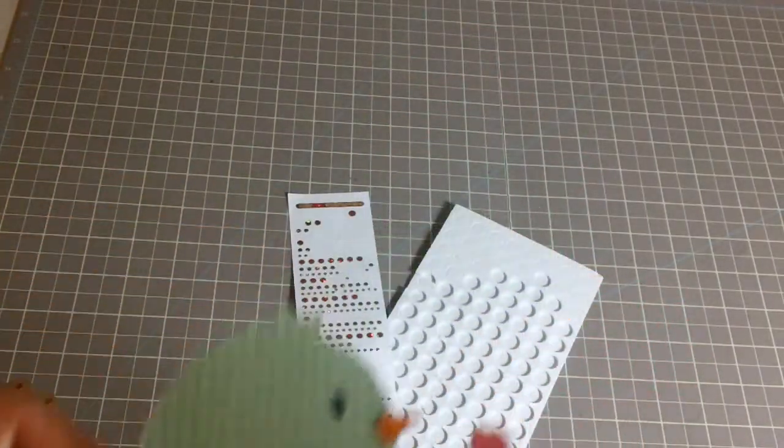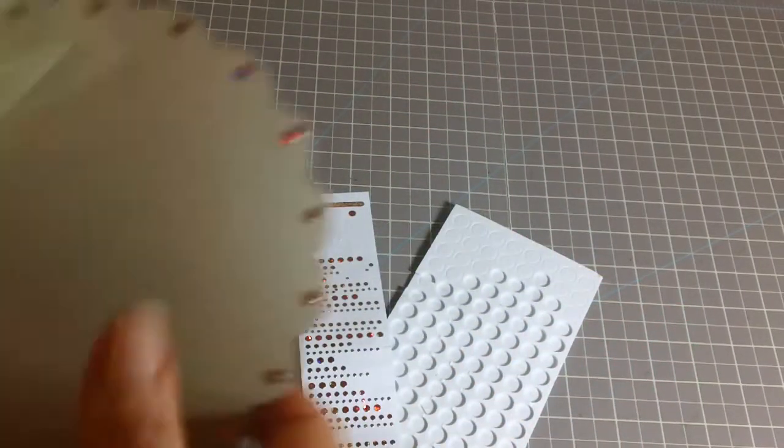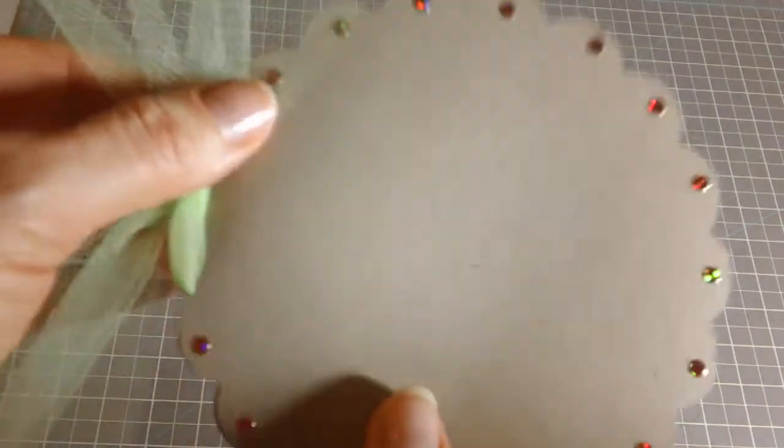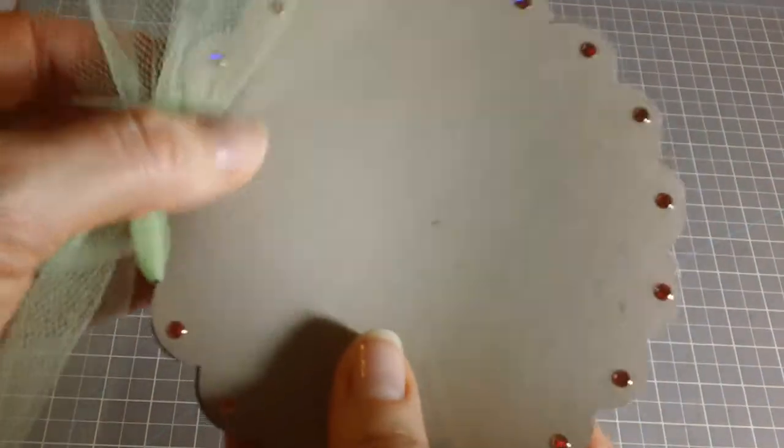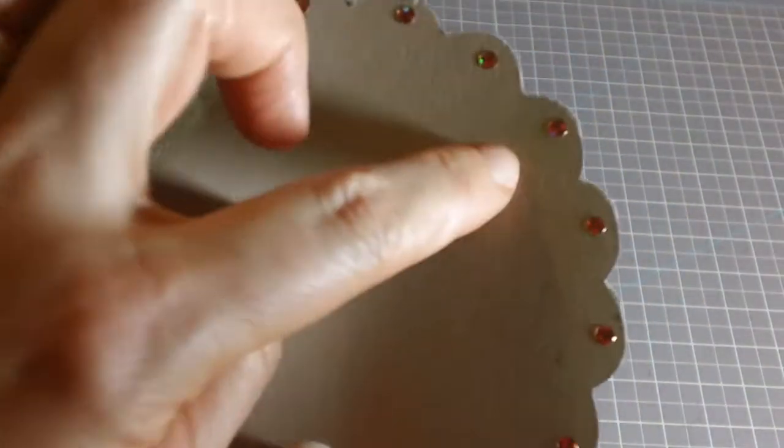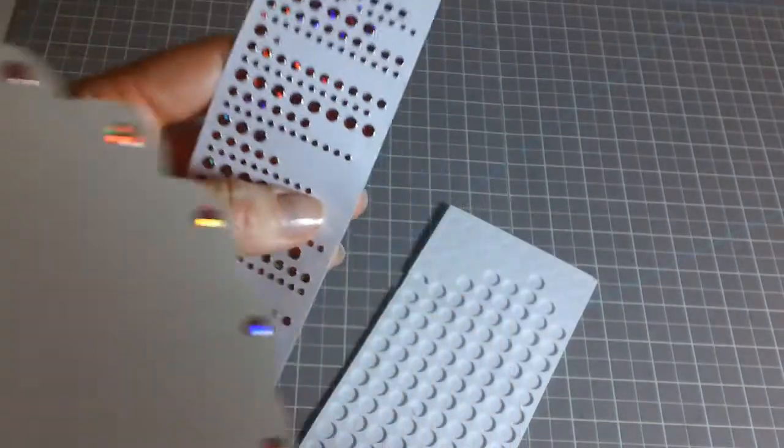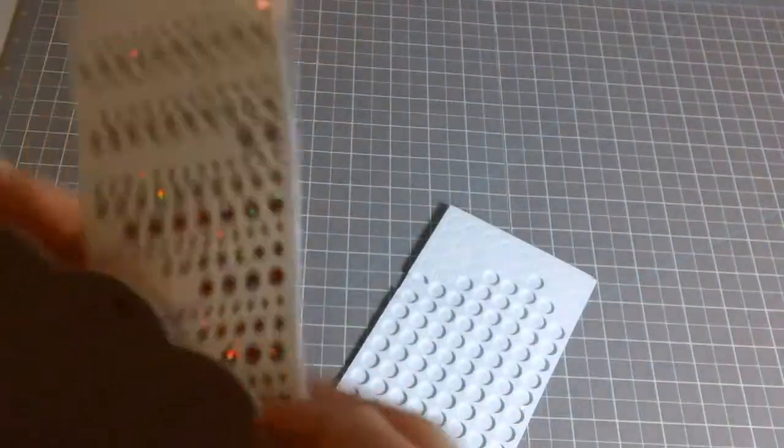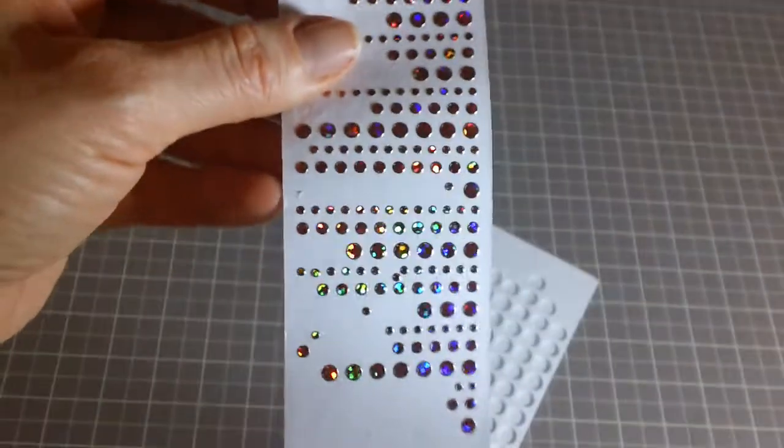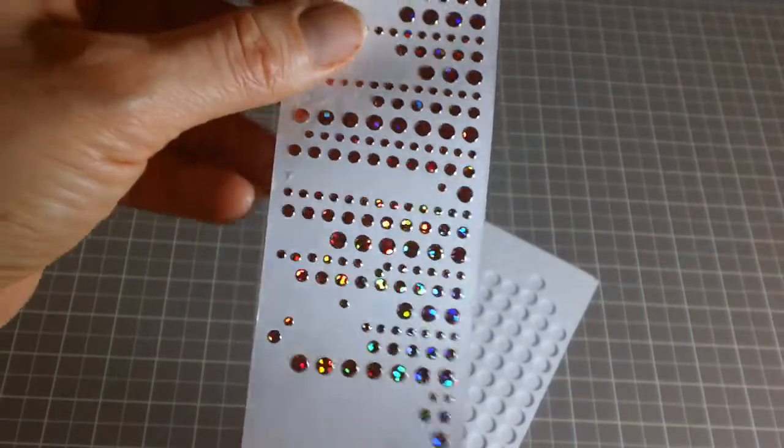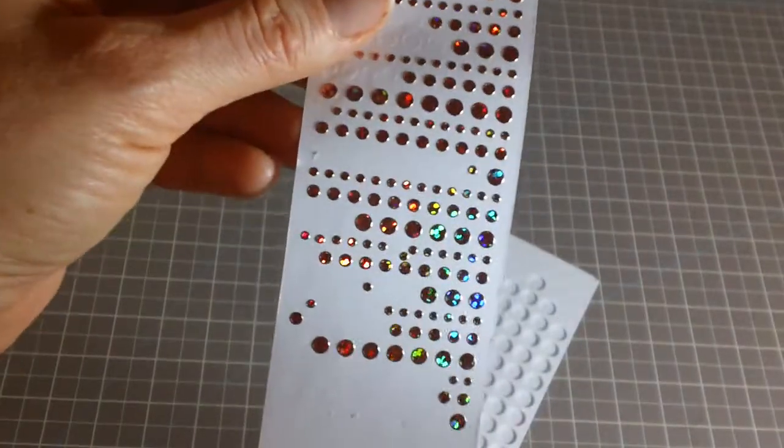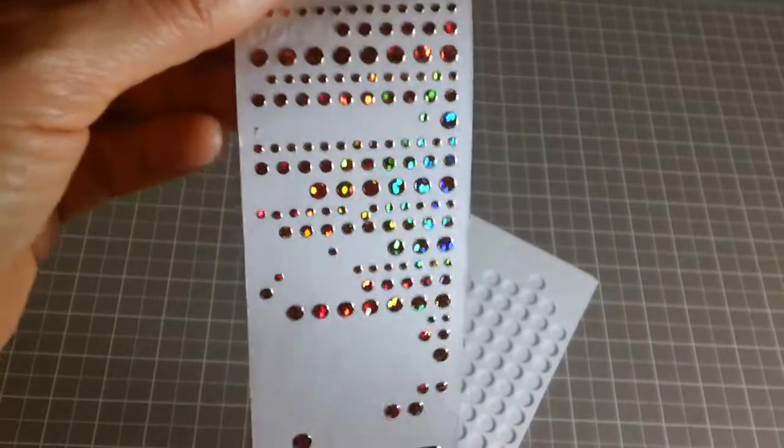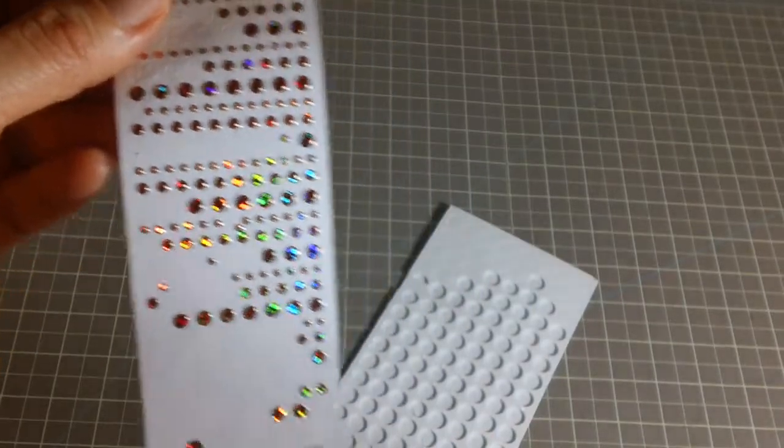My card base here is from Birthday Bash and I cut it out at five inches. These cute little rhinestone-like things are from Stampendous and I think I got them from Joann's or Michael's. I love them because they're super fun to work with and they're flat which is really cool because when you want to mail something it's not bulky.